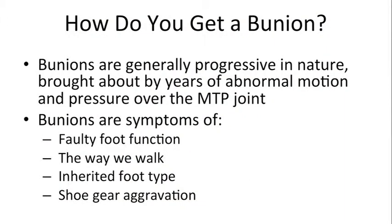The widening of the first intermetatarsal space and the drift of the big toe are predominantly caused by the way your foot is structured — what we refer to as biomechanics — how your foot hits and reacts with the ground. In a lot of folks, you can blame mom, dad, grandma, and grandpa: you inherit a foot type that reacts with the ground in an unstable way, causing bigger tendons to pull unevenly, setting off a cascade of the toe drifting and the intermetatarsal space increasing.